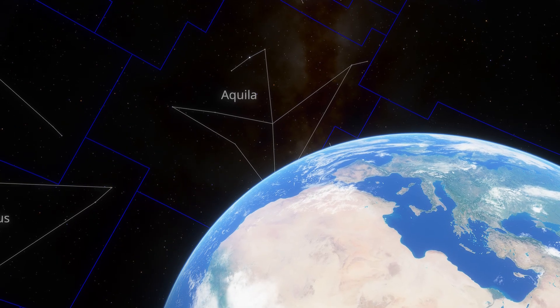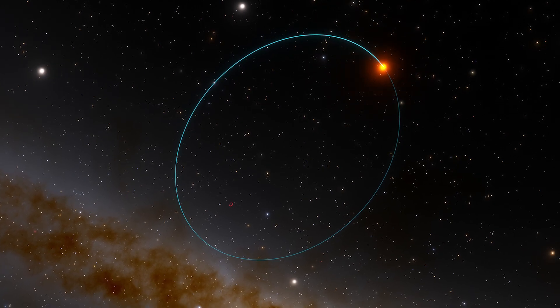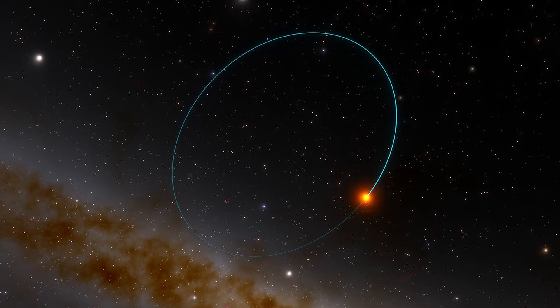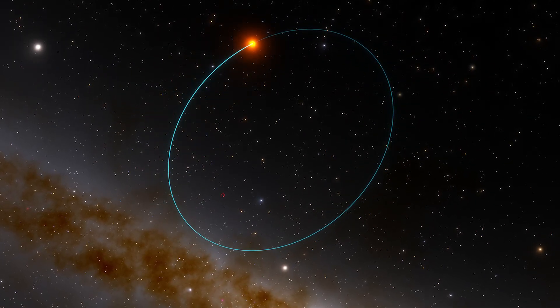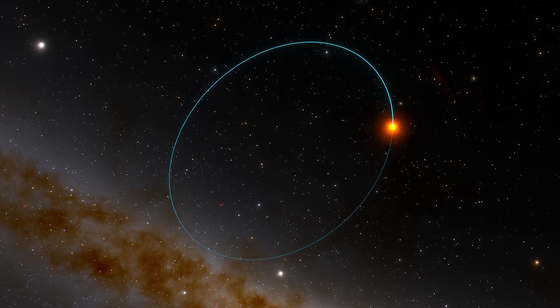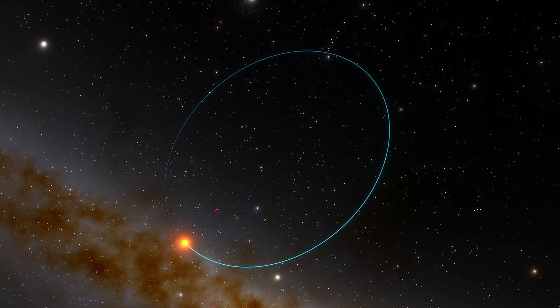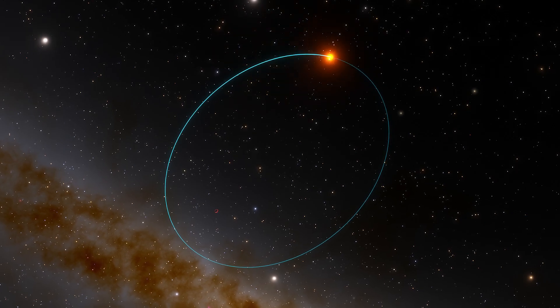Located in the constellation Aquila, Gaia BH3 was spotted due to the unusual motion of a star orbiting around it. This star, perturbed by the invisible yet massive neighbor, clued astronomers into the presence of this black hole.